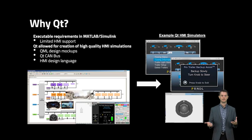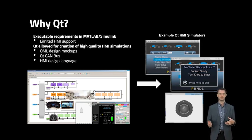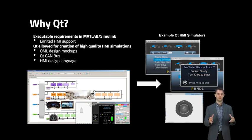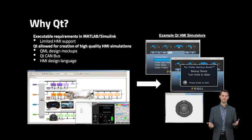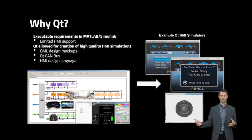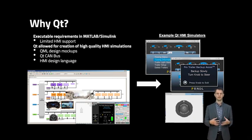So I turned to Qt in order to increase the capability of our HMI simulations. What I really liked about Qt was I was able to quickly mock up high-quality HMI in QML, and I was also able to integrate Qt CAN bus so that the HMI simulation was able to run on production CAN interfaces. Another benefit was that HMI teams at Ford were also utilizing Qt to create their HMI simulations, so I wanted to efficiently leverage their work and pull it into my feature simulations.